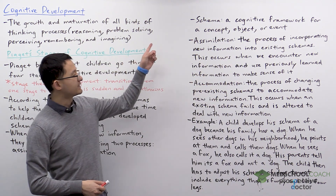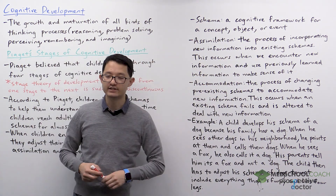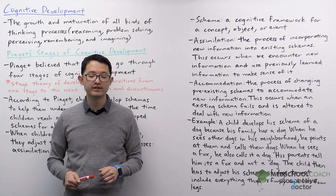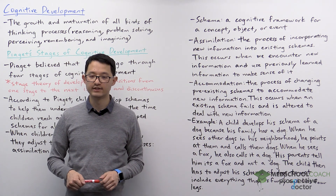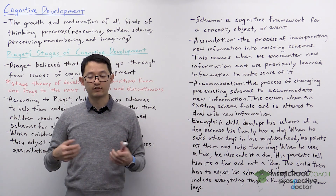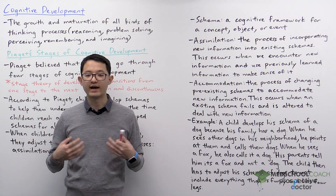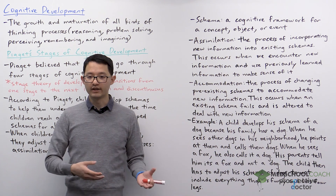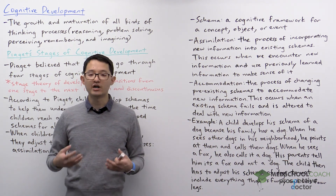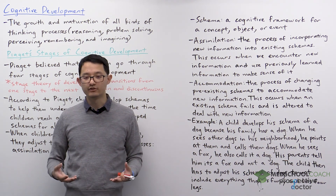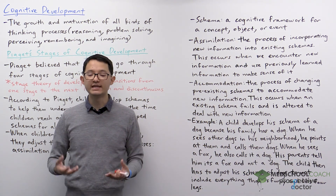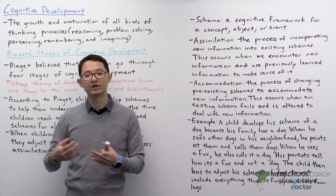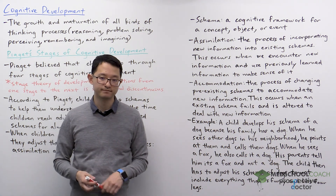The first term, schema, is a cognitive framework for a concept, object, or event. For example, if you ask a child what is a boy or what is a girl, the child is going to use their schema of what a boy is or what a girl is to answer your question.